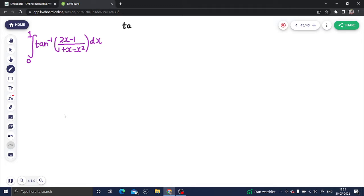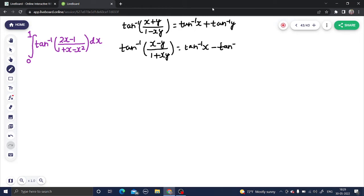First one is tan inverse of x plus y divided by 1 minus xy. This gives you tan inverse of x plus tan inverse of y. And the second one is tan inverse of x minus y divided by 1 plus xy. This gives you tan inverse x minus tan inverse y.